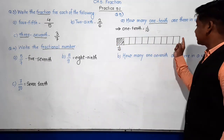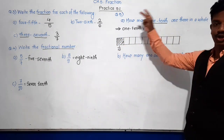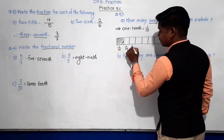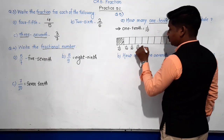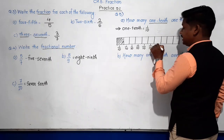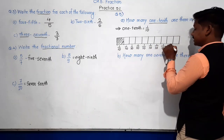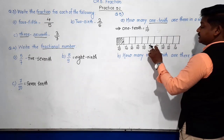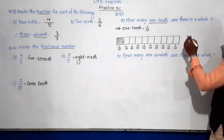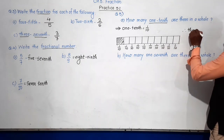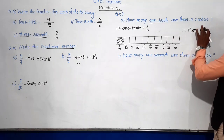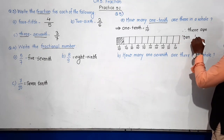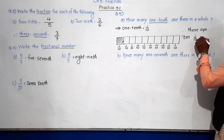So how many one-tenths are there in this whole? Complete chocolate — how many one-tenths are there? Each part in this strip represents one-tenth. So how many one-tenths are there? One, two, three, four, five, six, seven, eight, nine, ten. There are ten one-tenths in a whole.